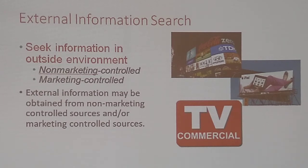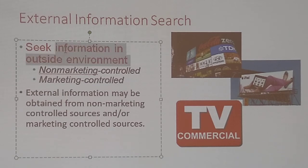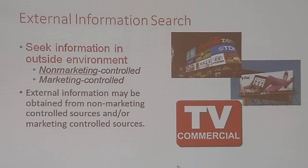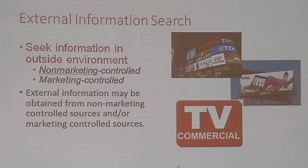External information search seeks information in the outside environment. External information may be obtained from non-marketing controlled sources or marketing controlled sources. You have your advertisements like your billboards, but you also might have people driving a particular car — that in a sense is advertising that car. People wearing a particular style of clothes or carrying a purse. Or there could be ads — those are marketing controlled.